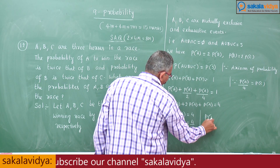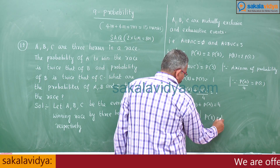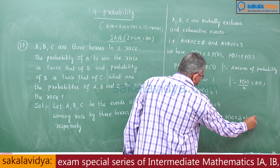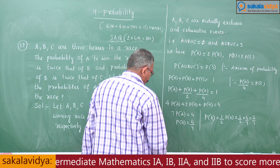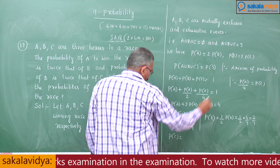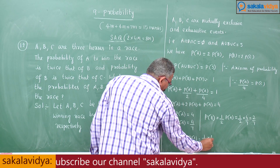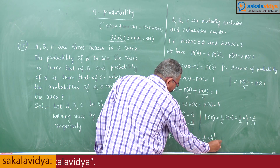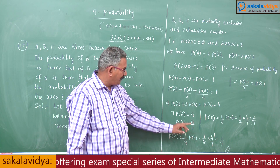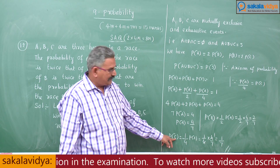Now P(B) is half of P(A), so P(B) = (1/2) × (4/7) = 2/7. And P(C) is one-fourth of P(A), so P(C) = (1/4) × (4/7) = 1/7. So the probability of winning the race by A is 4/7, by B is 2/7, and by C is 1/7.